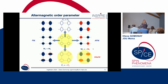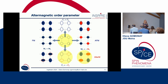Then we have two order parameters: one is a structural order parameter which describes the ultramagnetic structure of the lattice, and the other is the magnetic order parameter which was introduced by Neel.